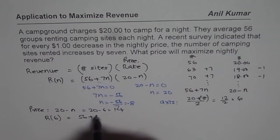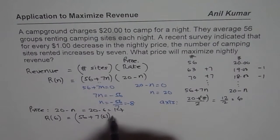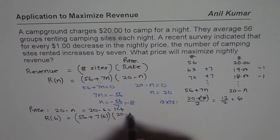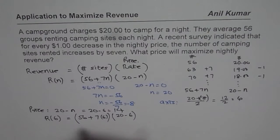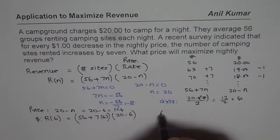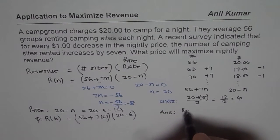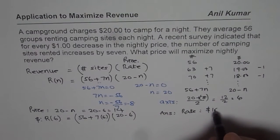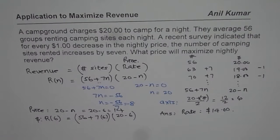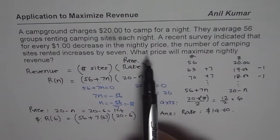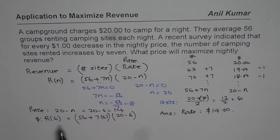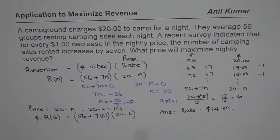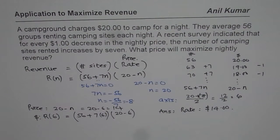Substituting n = 6: revenue = (56 + 7×6)(20 − 6), which gives the maximum revenue in dollars. In any case, we know the rate and can write our answer: the price that maximizes nightly revenue is $14. Sometimes a question may ask for the maximum revenue itself — in that case, you need to solve for the revenue value. That is how this question should be done. I hope that is clear. Thank you and all the best.